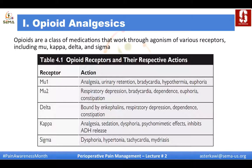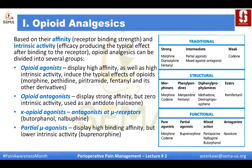Traditionally opioids have been classified as strong, intermediate, or weak. Weak includes codeine; strong includes morphine, fentanyl, and hydromorphone. Based on affinity — the receptor binding strength — and intrinsic activity, or efficacy, opioids can be divided into several groups: full agonist, antagonist, mixed agonist-antagonist like nalbuphine which is an agonist at kappa and antagonist at mu, or partial agonist like buprenorphine.